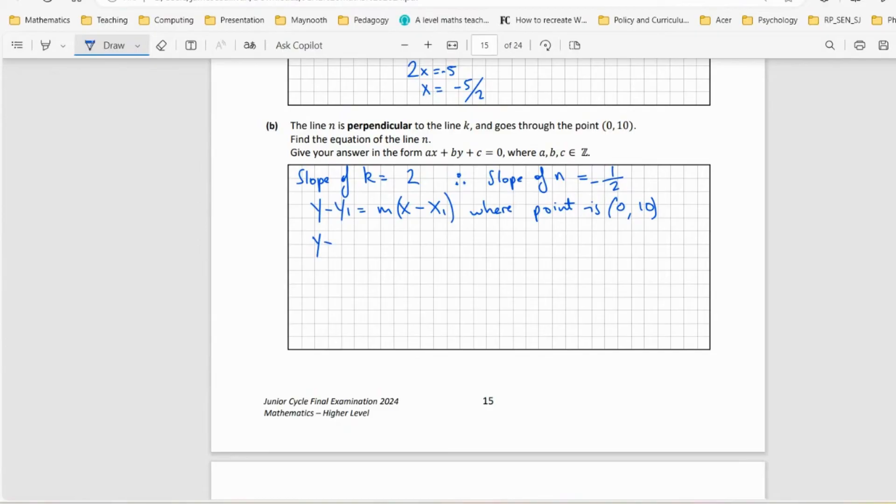Let's put that in. We have y - 10 = -1/2 times (x - 0). This becomes -1/2x and the zero just goes away.